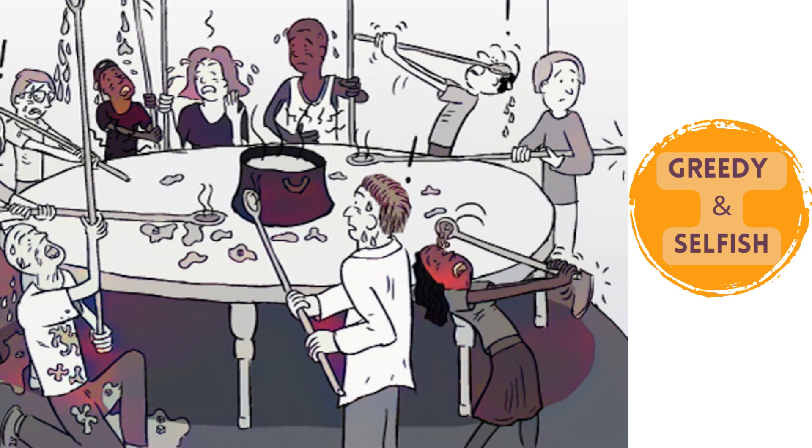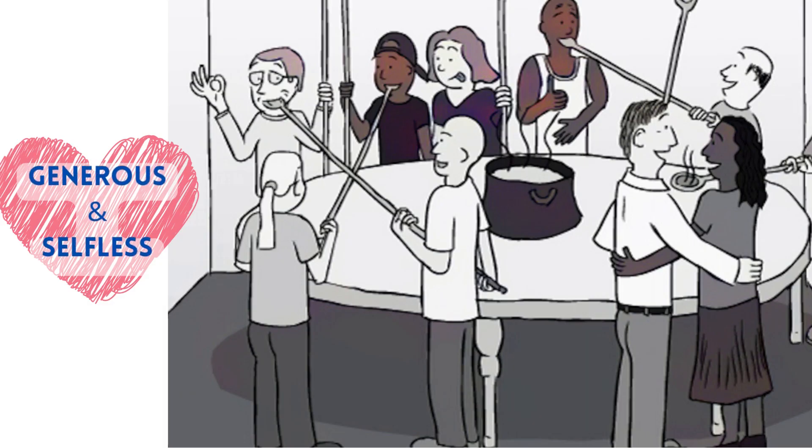In the second room, the people are able to eat and thrive because they have learned to cooperate and feed each other. They are selfless and generous, and they put the needs of others before their own.